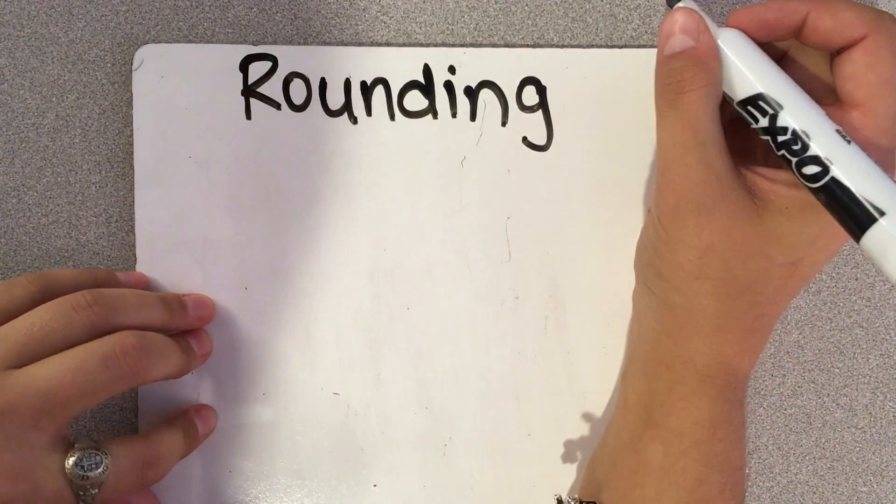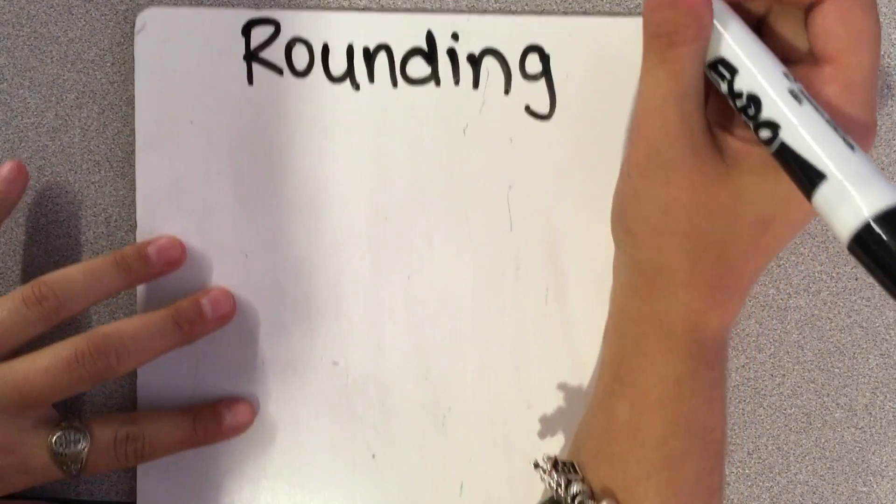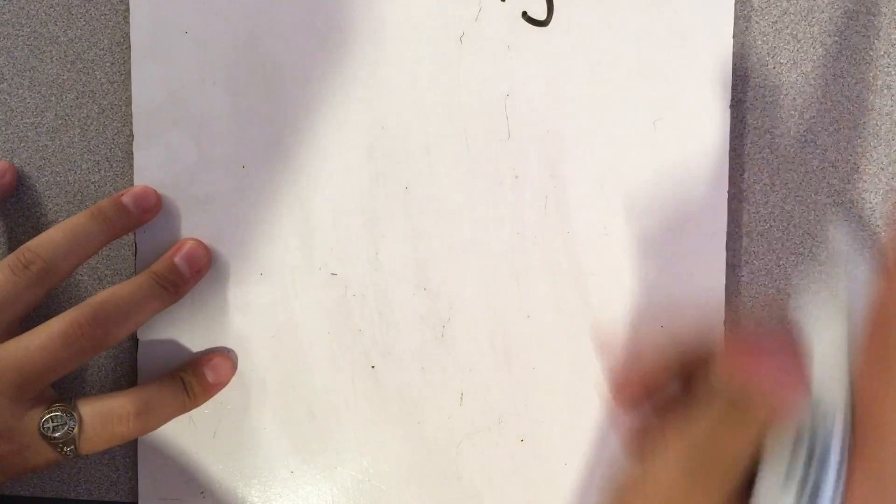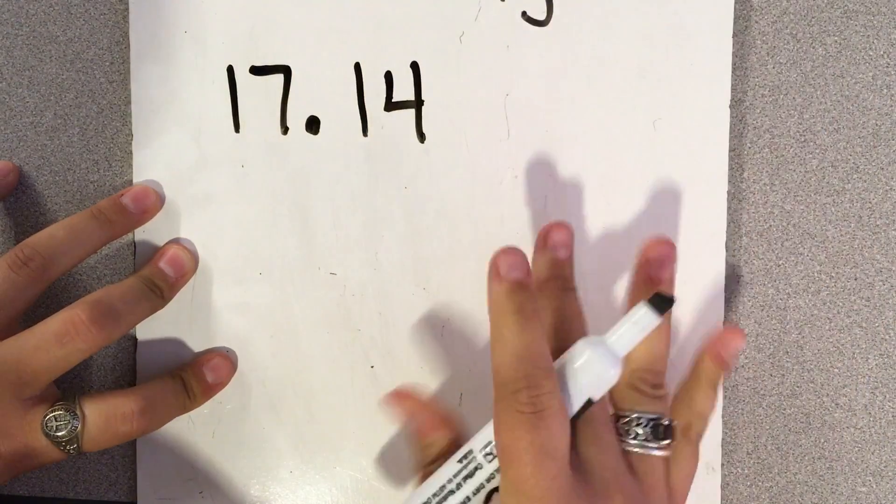On this short video, I'm going to show some examples of rounding decimals to the nearest place value. So here's one example, 17 and 14 hundredths.